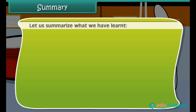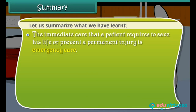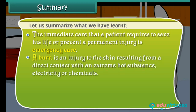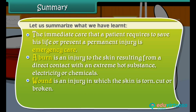Let us summarize what we have learned. The immediate care that a patient requires to save his life or prevent a permanent injury is emergency care. A burn is an injury to the skin resulting from direct contact with an extremely hot substance, electricity, or chemicals. A wound is an injury in which the skin is torn, cut, or broken.